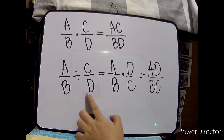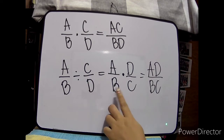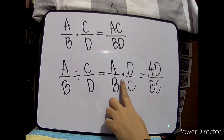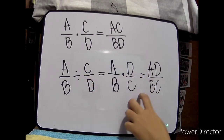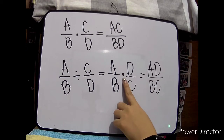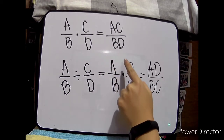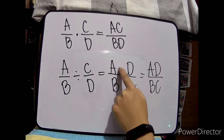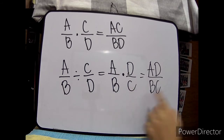Just follow along: we reciprocal our divisor and then change the operation into multiplication. So from c over d, it becomes d over c, and our operation becomes multiplication. Then we apply multiplying numerator to numerator and denominator to denominator.